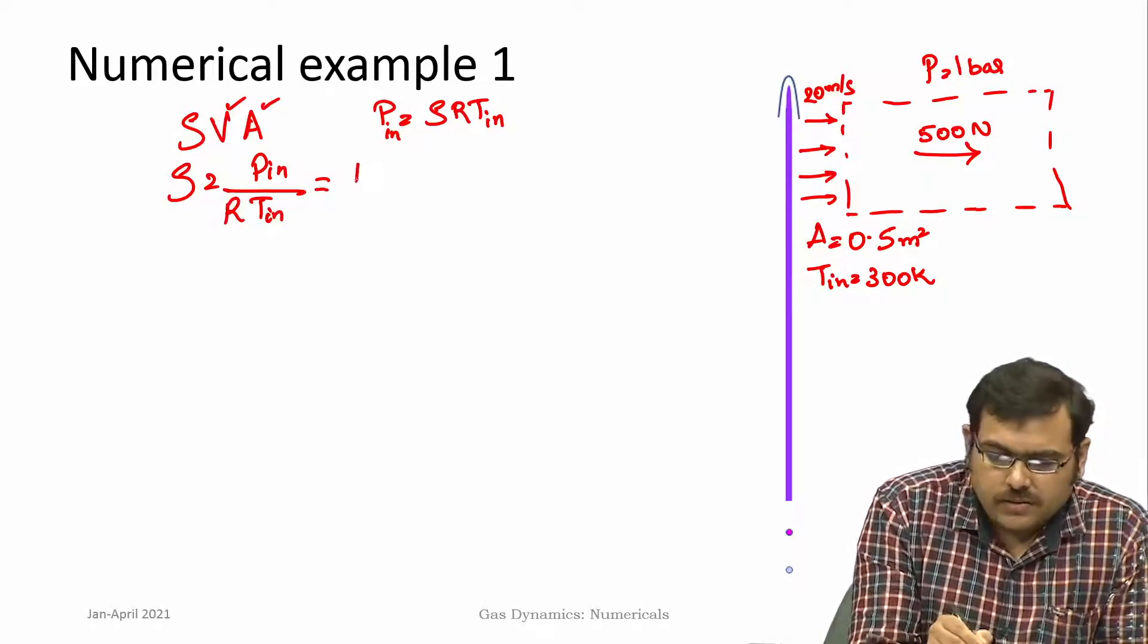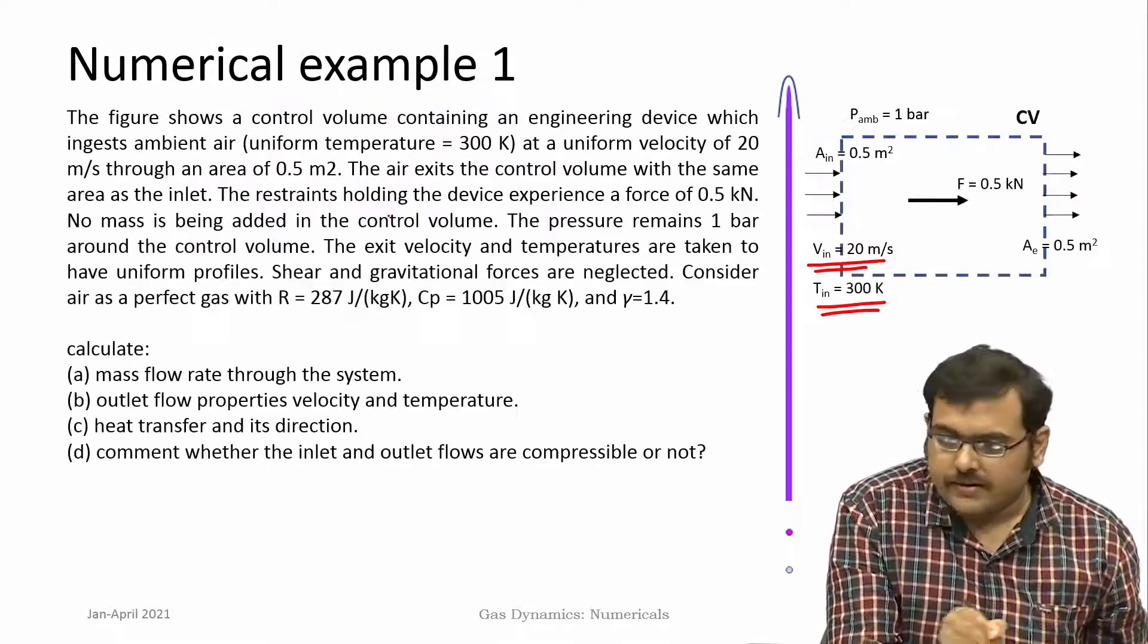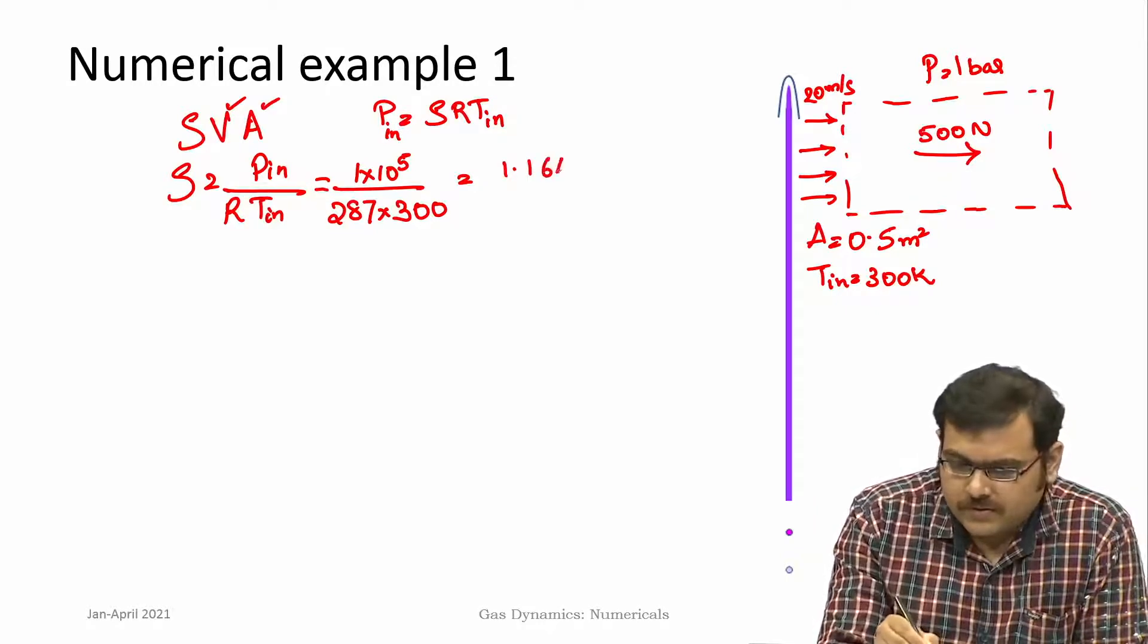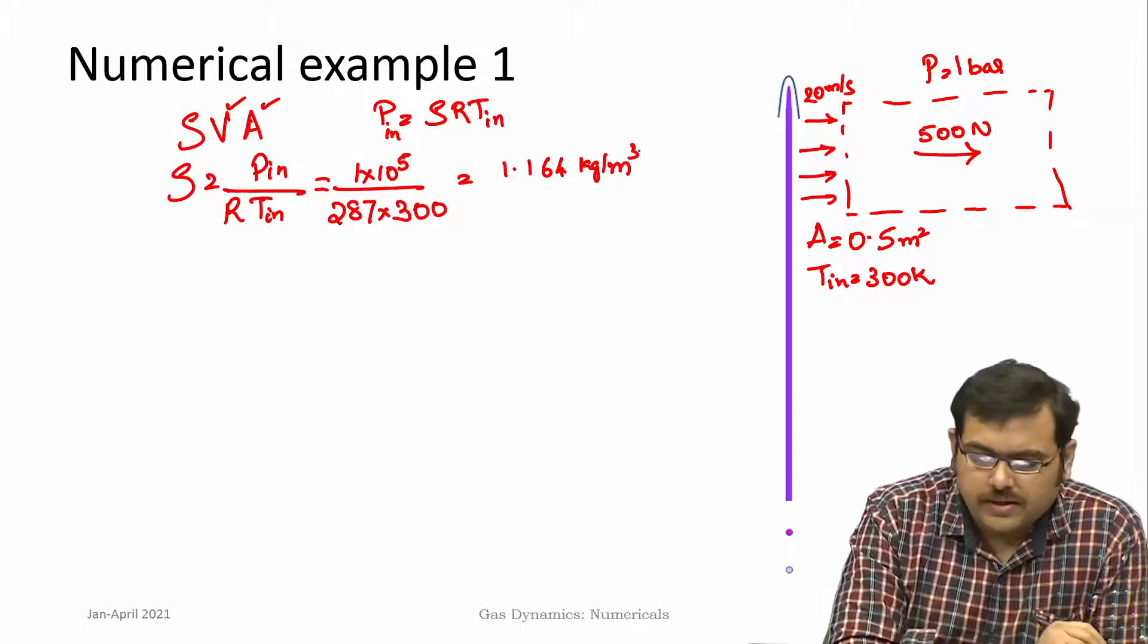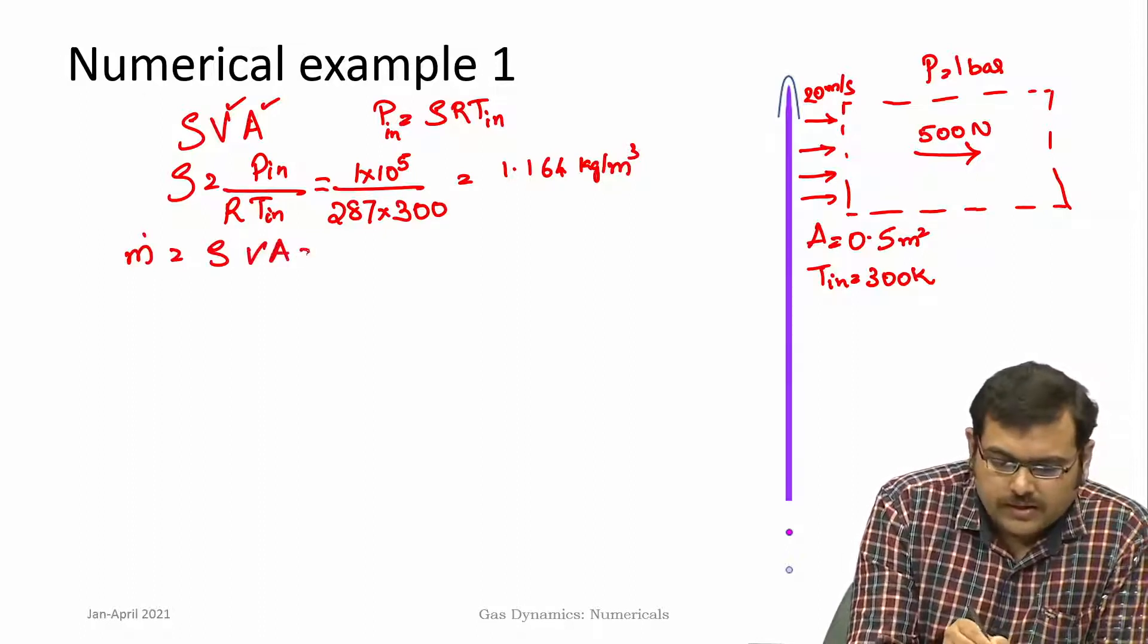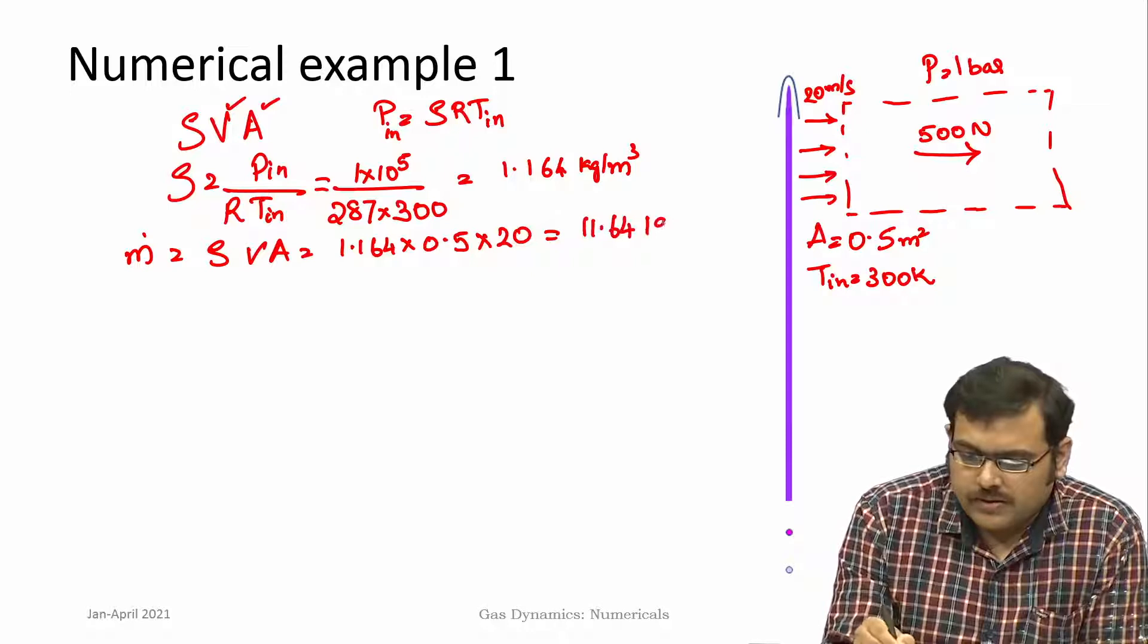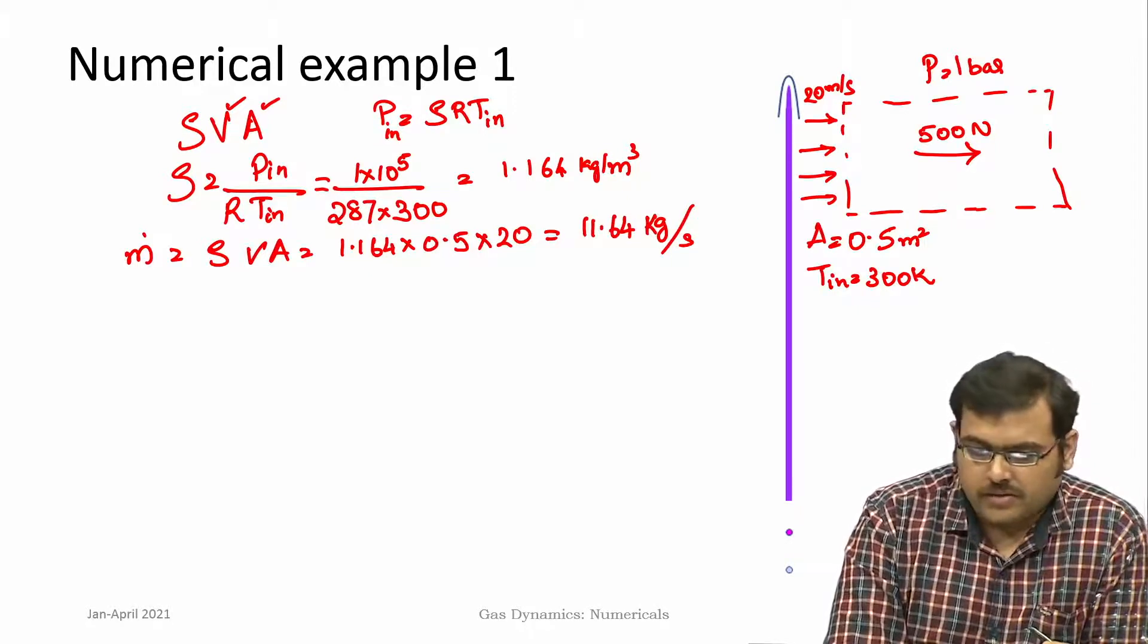So rho is p_inlet by R T. This is 1 bar divided by 287 multiplied by 300 Kelvin, which works out to be 1.16 kilogram per meter cube. That can be directly substituted into mass flow rate. Mass flow rate is then rho v A is 1.16 times 0.5 times 20, which is 11.64 kilogram per second. This is the mass flow rate through the system.